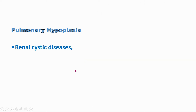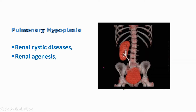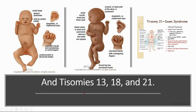Pulmonary hypoplasia may also be associated with renal cystic diseases or renal agenesis, because these will also compress the lungs. Agenesis means absence — not formation. Here is agenesis of the left lung; you can see the right lung, but there is no left lung. This is renal agenesis. It may also be associated with trisomy 13, 18, or trisomy 21.